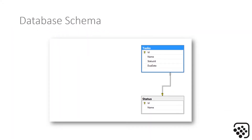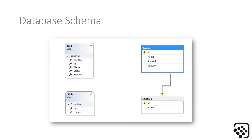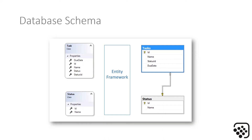Our database schema will actually be created for us by Entity Framework. You can see there are two tables: the tasks table and the status table. You can also see our code classes — task and status. And Entity Framework sits in the middle, basically translating between our code base classes and our database classes.